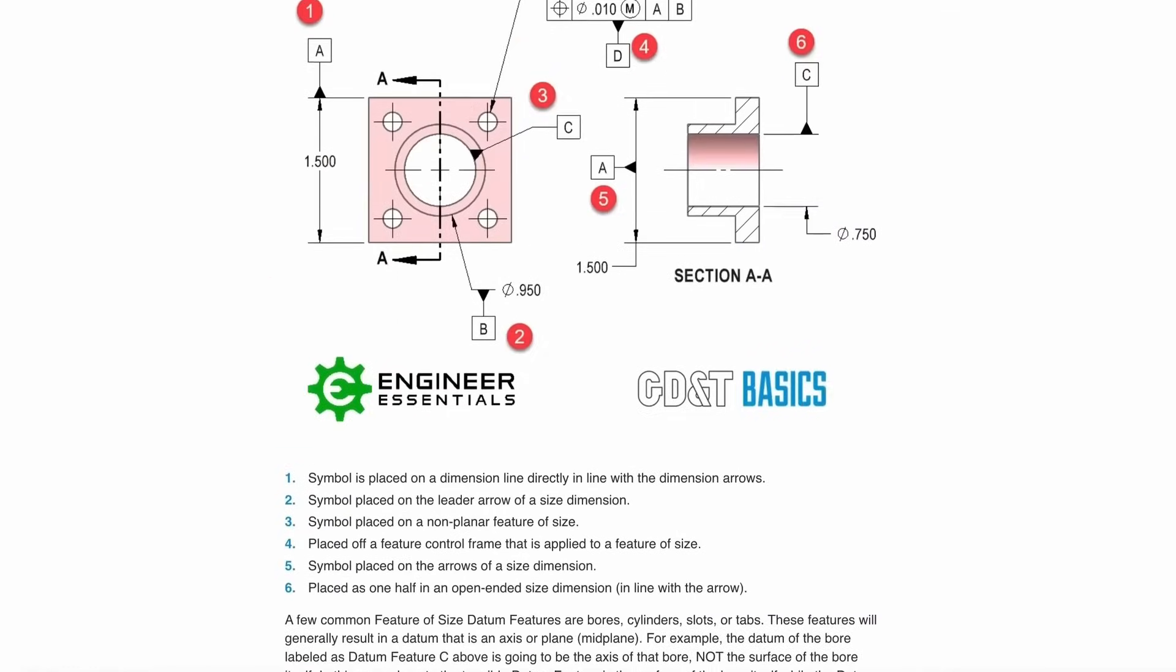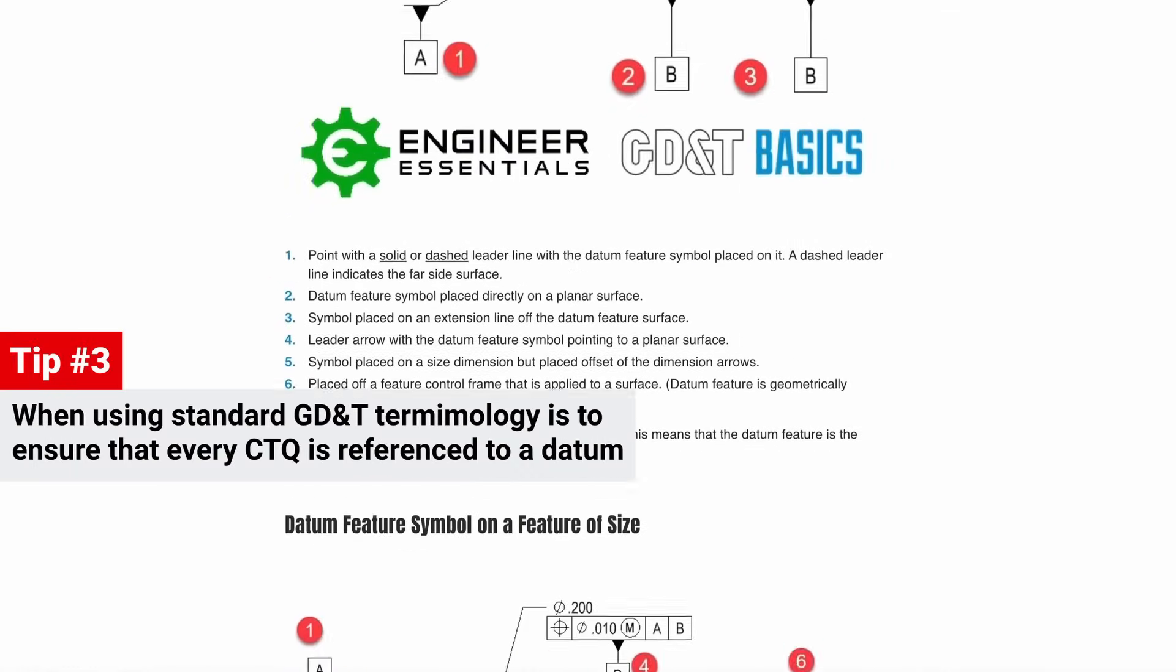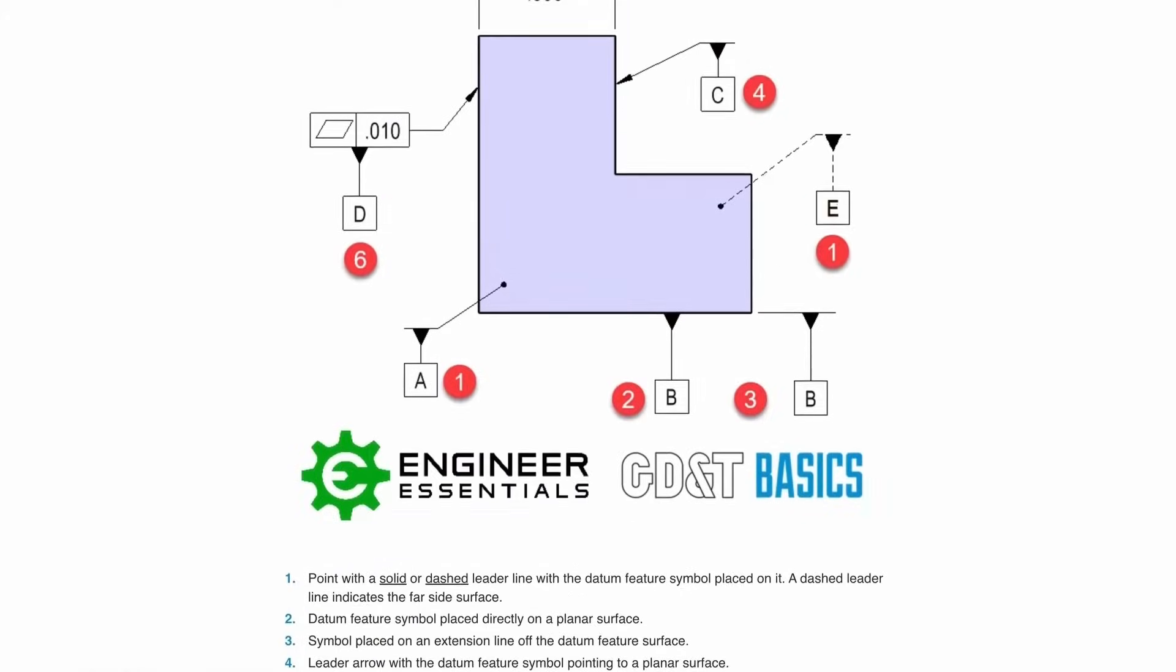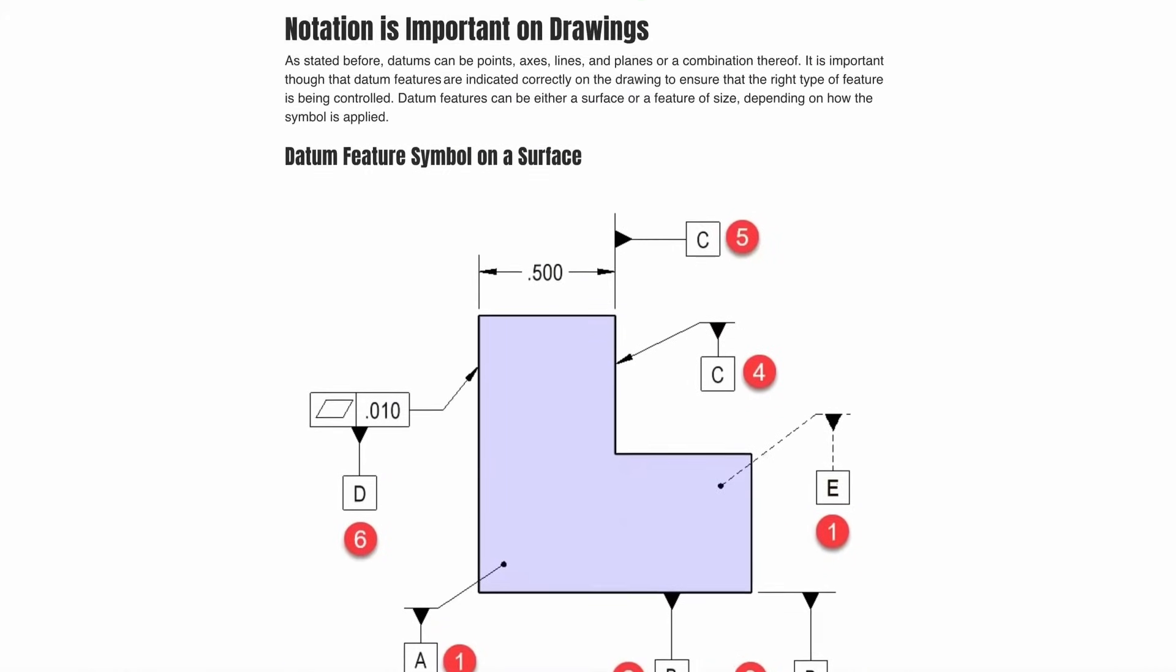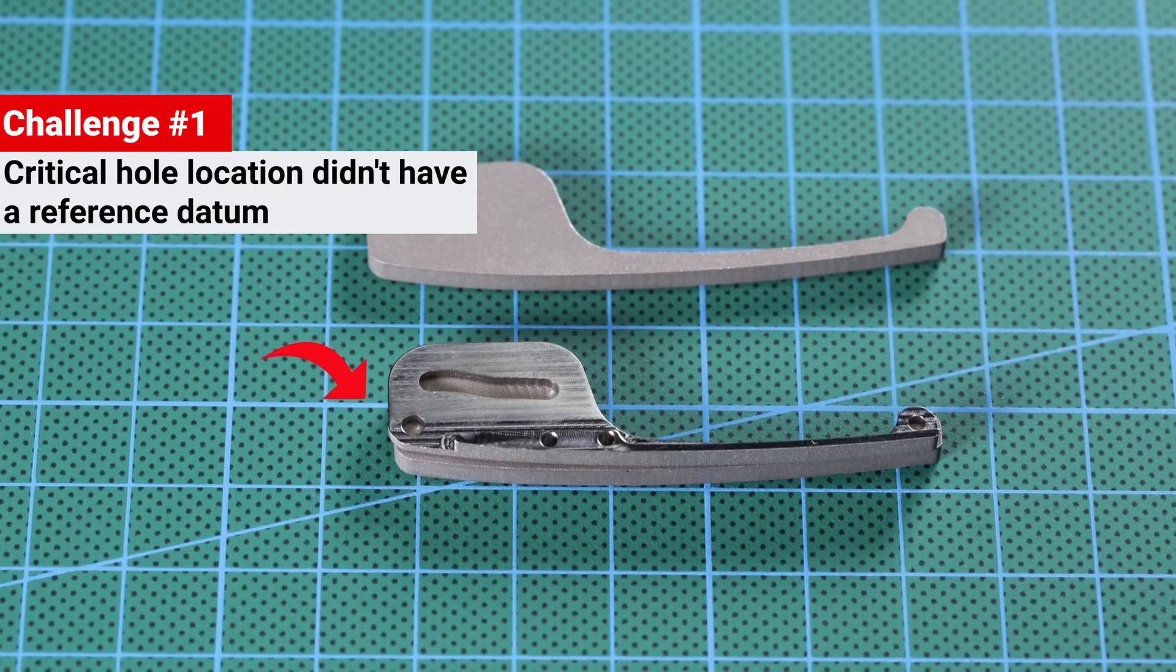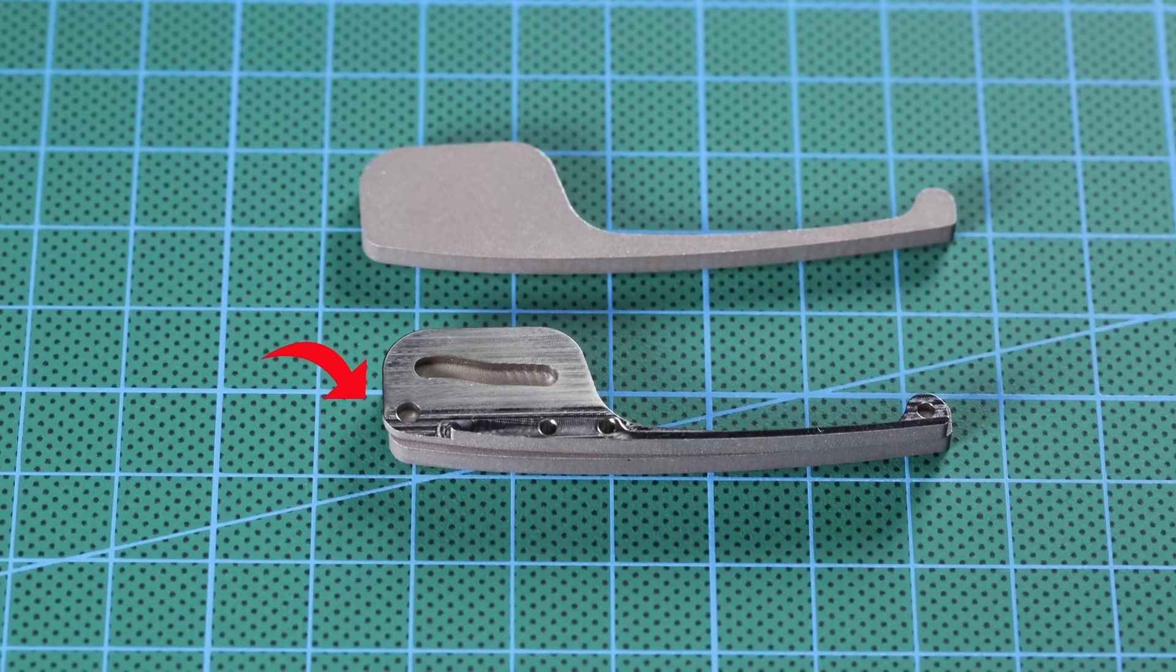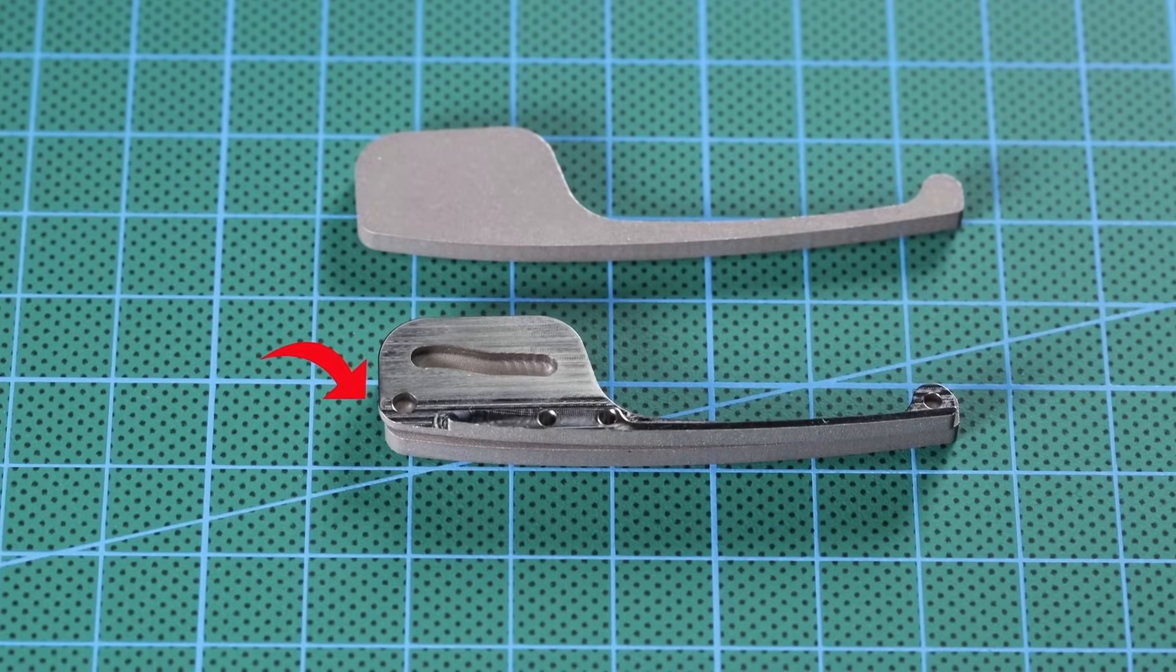One of the best practices when using standard GD&T terminology is to ensure that every CTQ is referenced to a datum, and that this datum is clearly indicated on the drawing. This whole location, for example, was marked as critical, but it didn't have a reference datum. Without it, it's impossible to accurately make and measure such a feature.